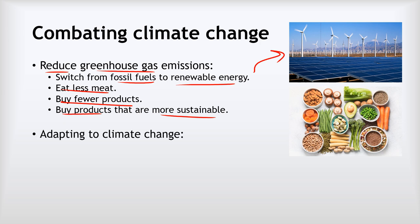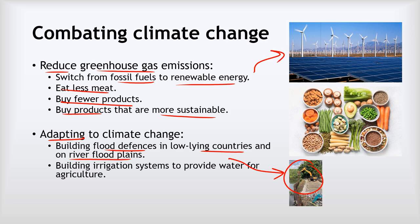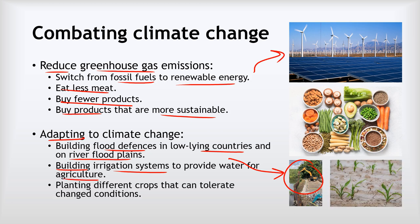In addition to reducing emissions, we need to adapt to climate change and learn to live with a warmer planet. Practically, this means building flood defences in low-lying countries and on river flood plains. We'll need more irrigation systems — canals and water channels — to provide water for agriculture, particularly where rainfall decreases. It also means planting different crops that can tolerate changed conditions, which will require global education for farmers so they can grow new crops with new techniques.